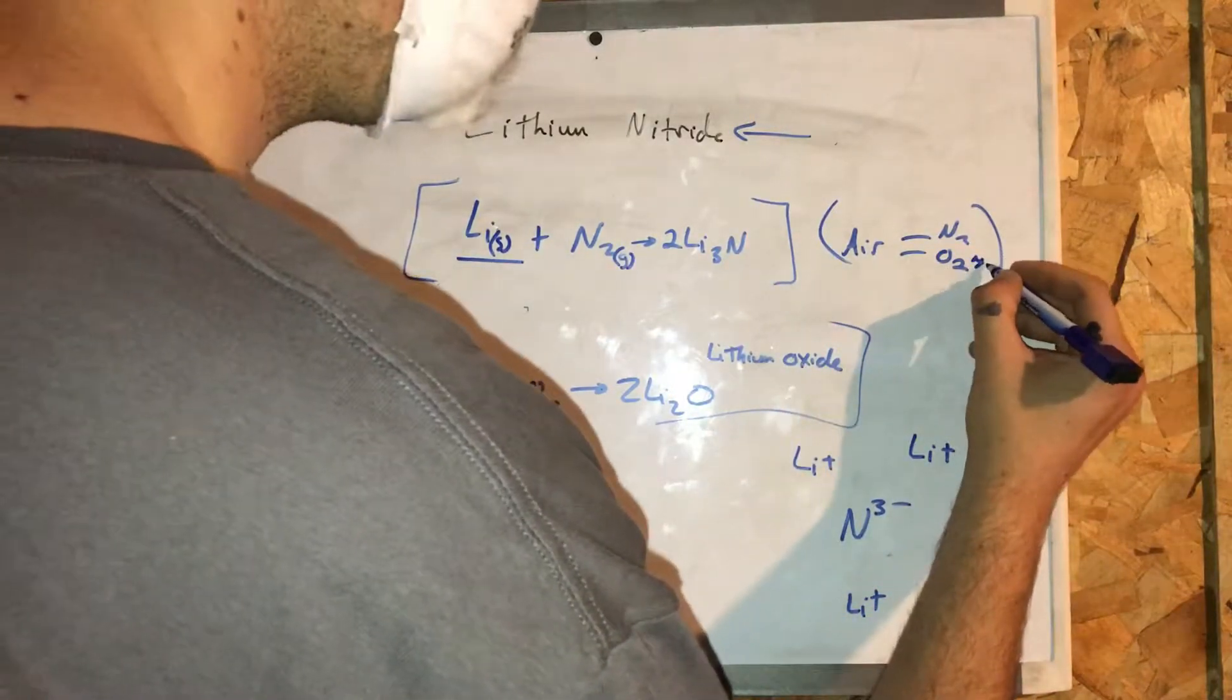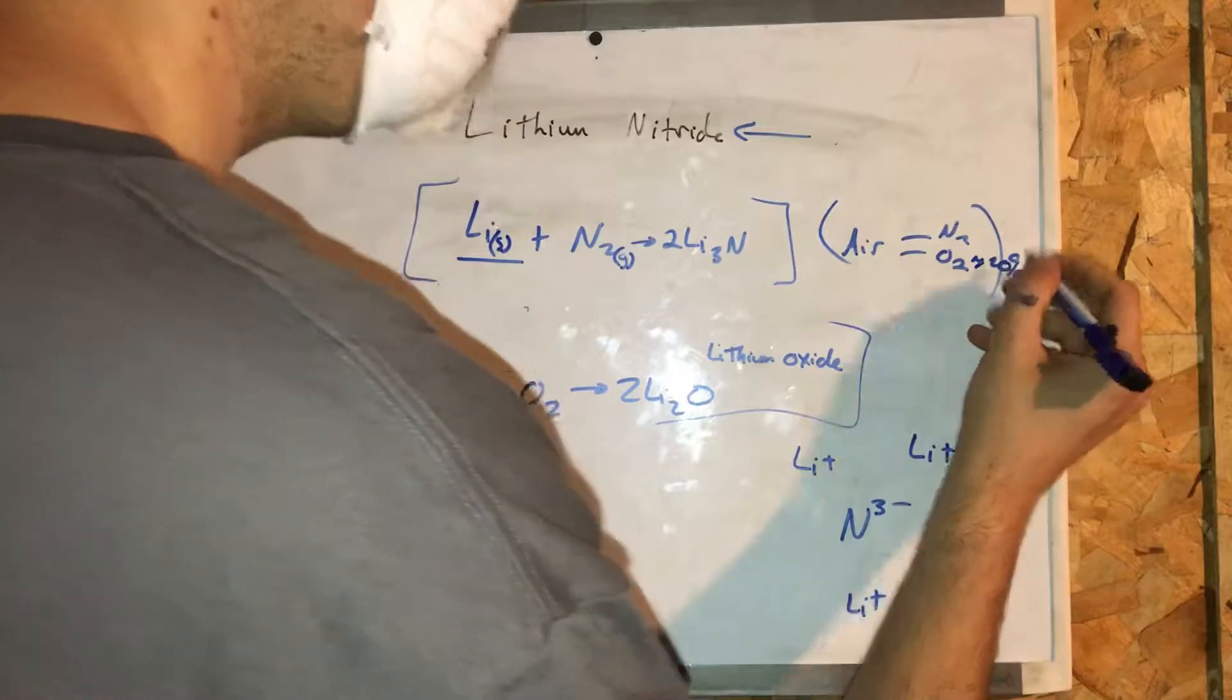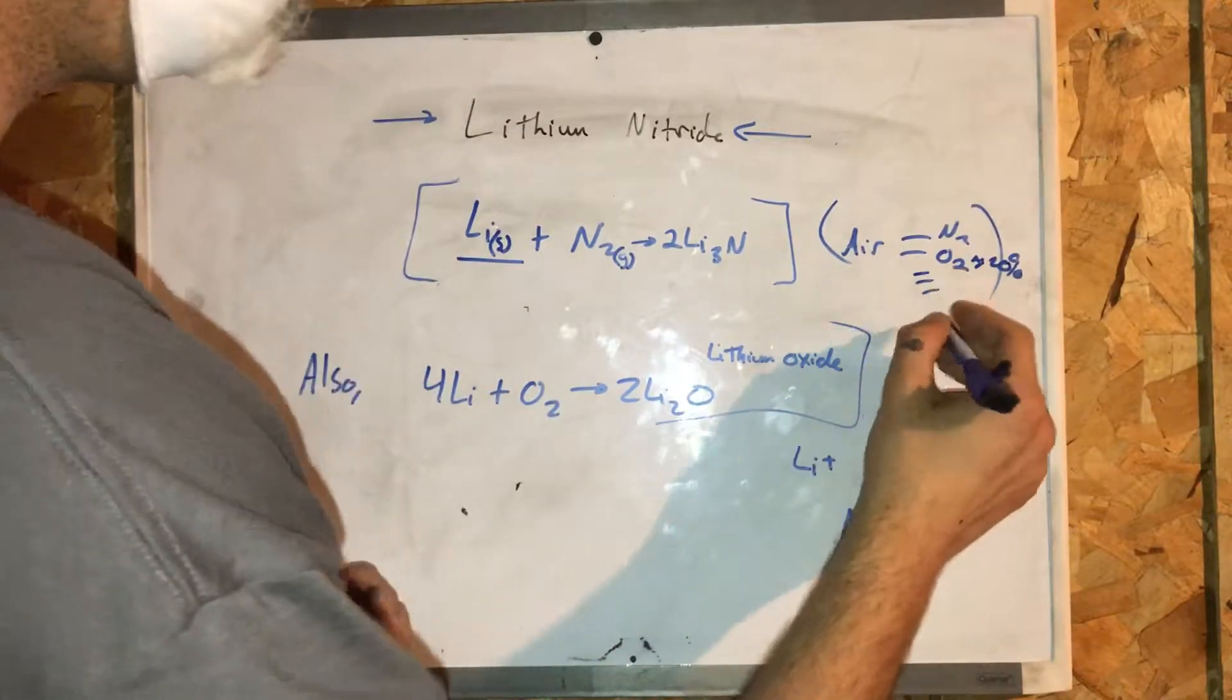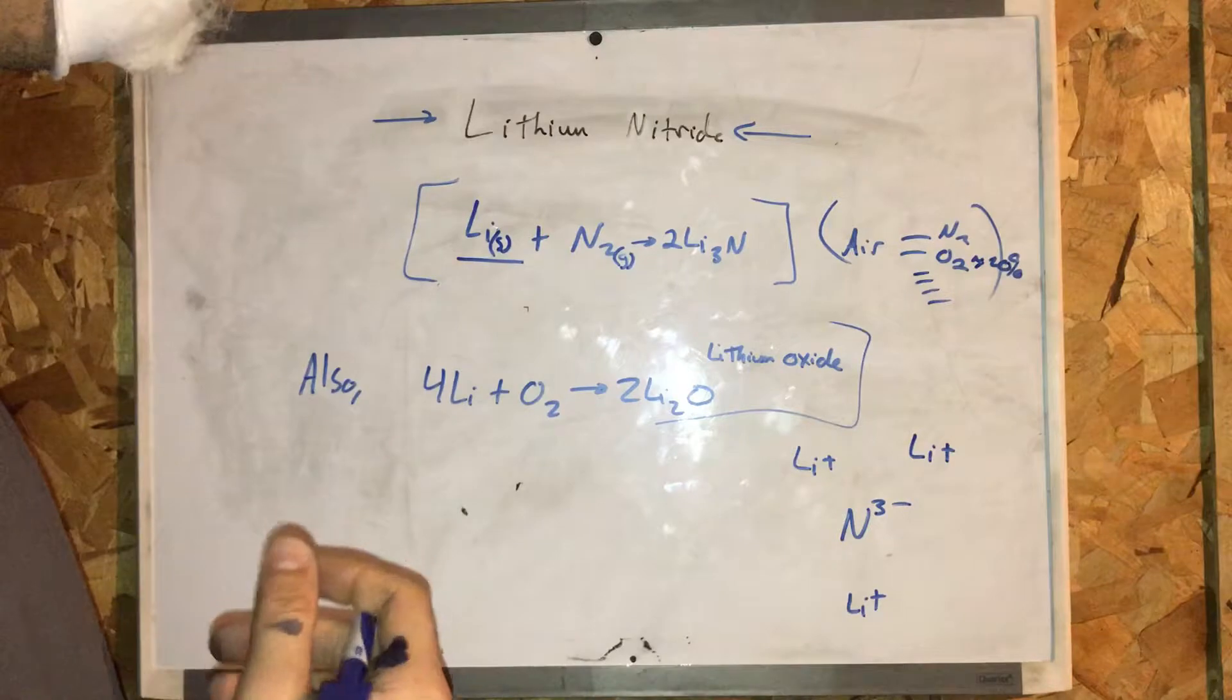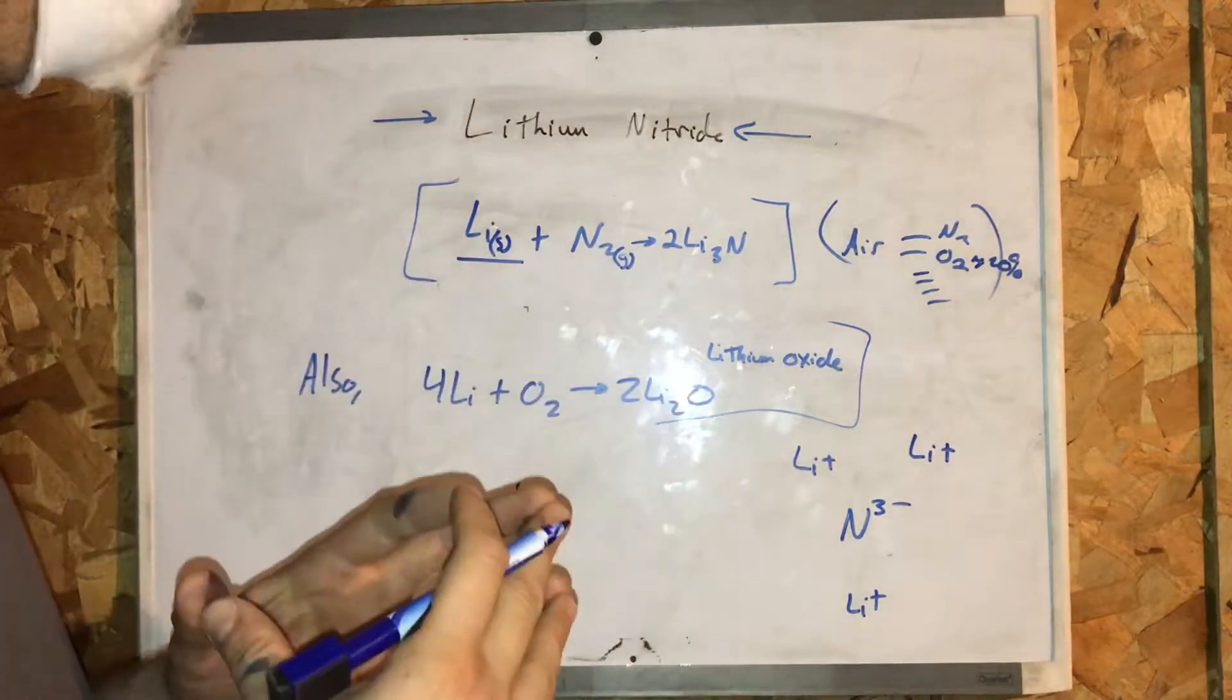Oxygen is approximately 20%. And the rest, there's trace metals and other gases, argon and whatnot. But the rest of the gas is nitrogen.